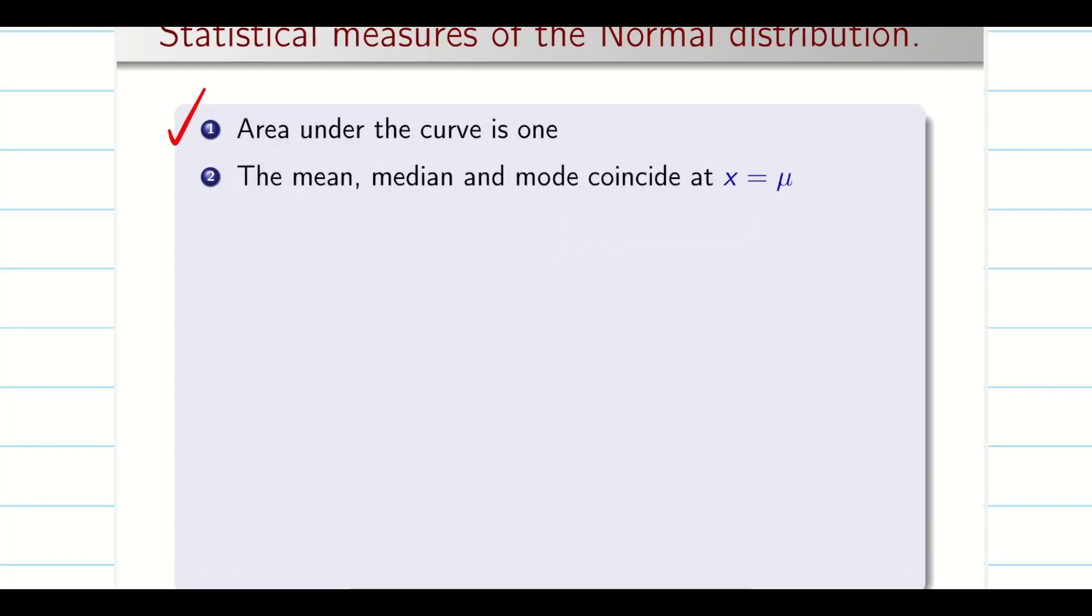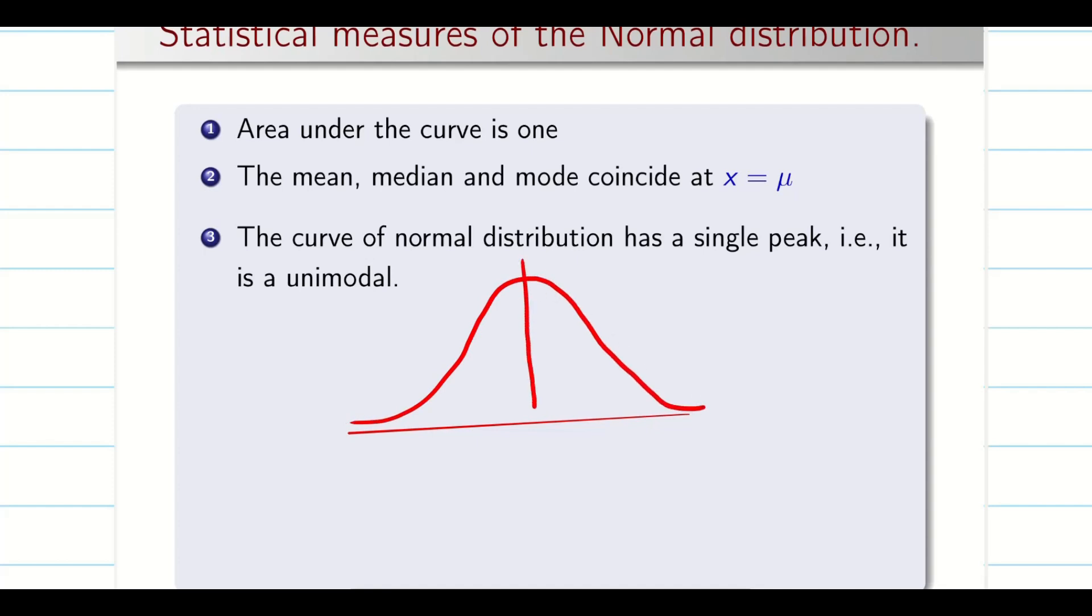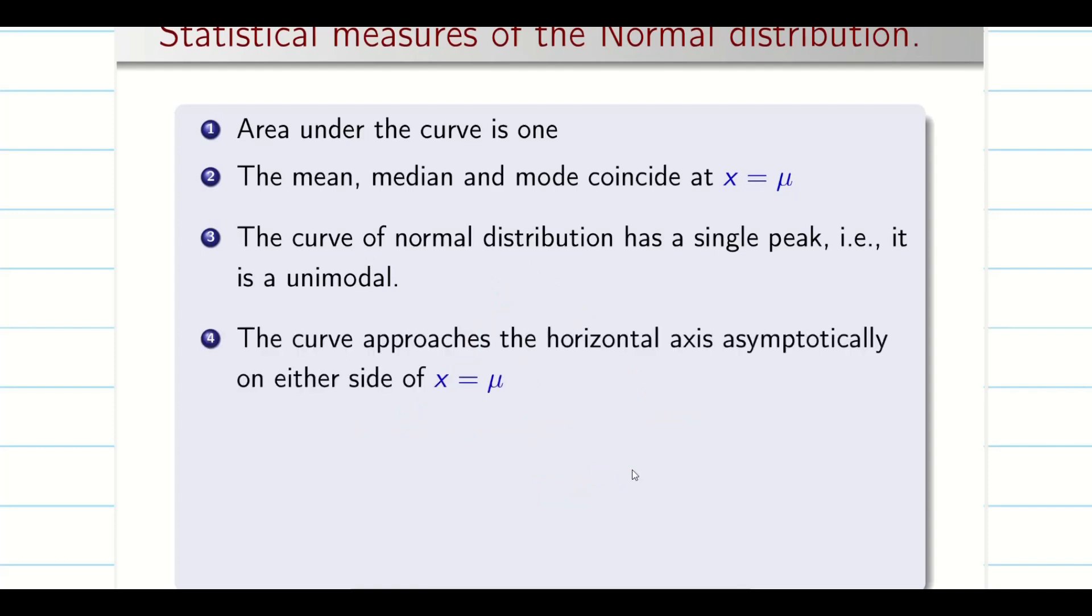Now, in normal distribution, mean, median, mode, all are coincide. So, they can ask mean, they can ask median, they can ask mode, all are same. It is simply what? x equal to μ guys. Now, you can see in the normal distribution when you draw, like only one point will have the peak value. That is x equal to μ. So, it has a single peak. So, it has a unimodal distribution. But, in the case of binomial or Poisson, it is different. These are all some MCQ's properties.